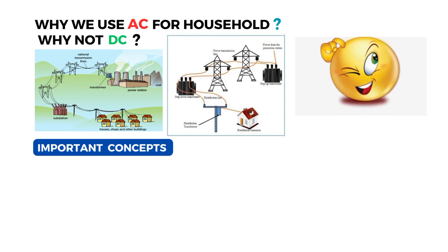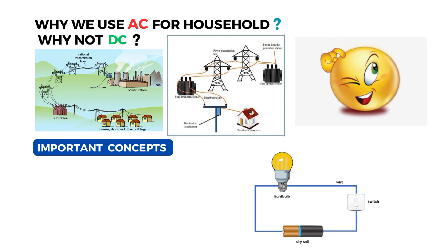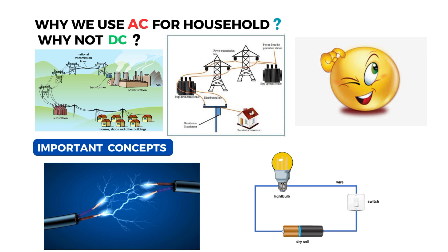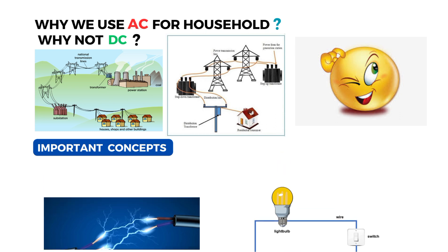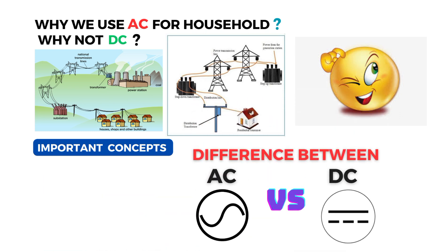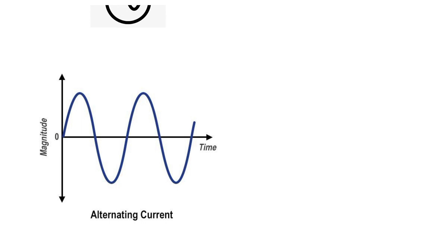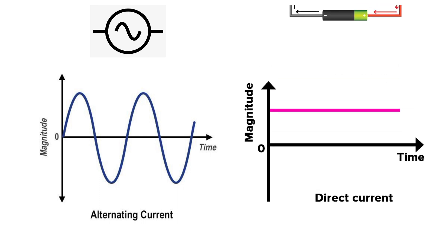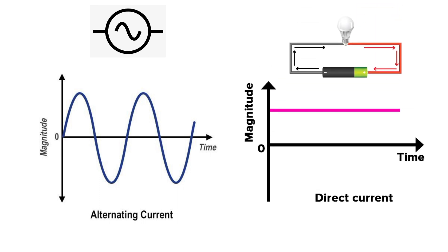Let's come to the question — why we don't use DC for household purposes but we are using AC in our home. Before answering, let us see what AC and DC are. AC, or alternating current, is that type of current whose value changes with time alternately, as you can see in the image. In case of DC, the value of current doesn't change with time — it always remains constant throughout the system.